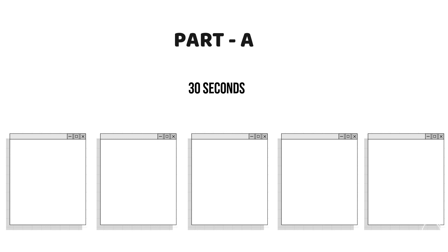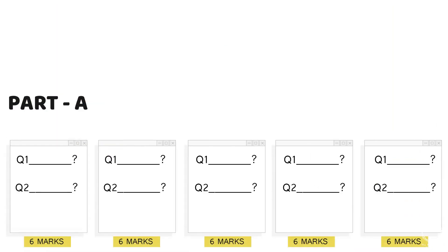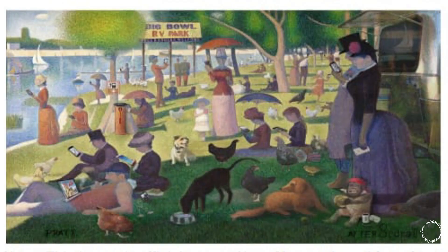The 10 questions in Part A showed 5 images in series, each displayed for about 30 seconds. After each image was shown, there were 2 questions asked specifically about that image, and each image carried 6 marks, making Part A a total of 30 marks. Usually NATA had memory drawing in previous years as a drawing exam, but this time they included memory drawing in a digital way.